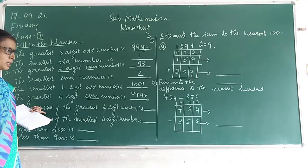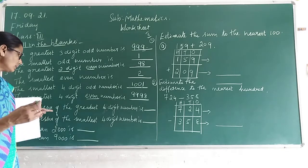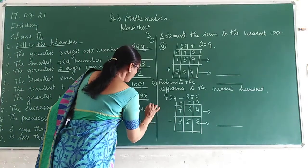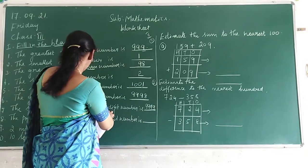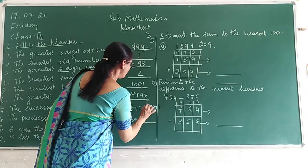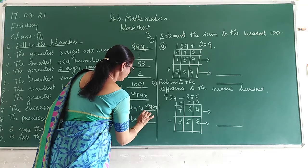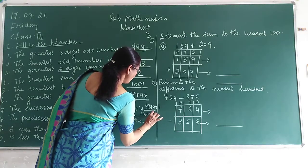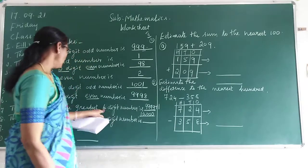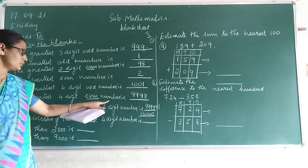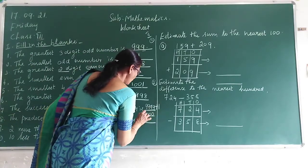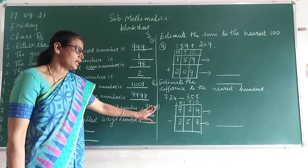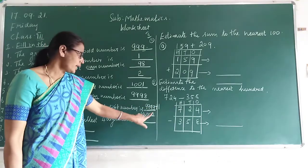Next step: the successor of the greatest 4-digit number. Successor means the next number — you have to add 1. The greatest 4-digit number is 9999. 9999 plus 1 is 10,000. So the successor of the greatest 4-digit number is 10,000.